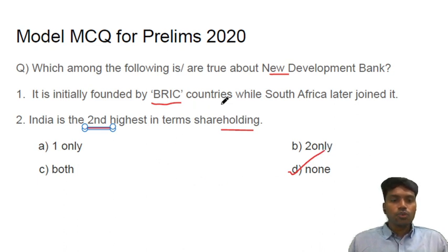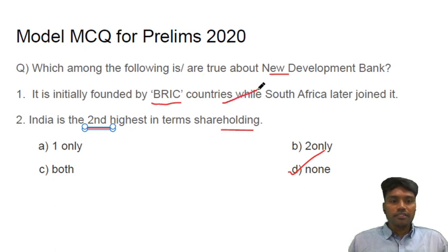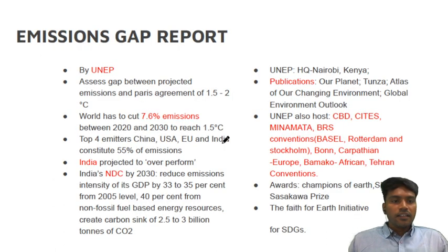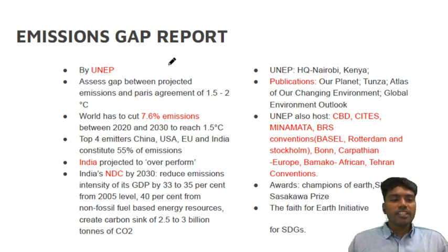So what is the tick term here? UPSC basically tends to confuse you regarding facts of the same institution. The second category we will be dealing with is the Emission Gap Report. This is given by UNEP. What does it exactly do? It assesses the gap between the projected emissions that are practically happening and what has been agreed in the Paris Agreement.